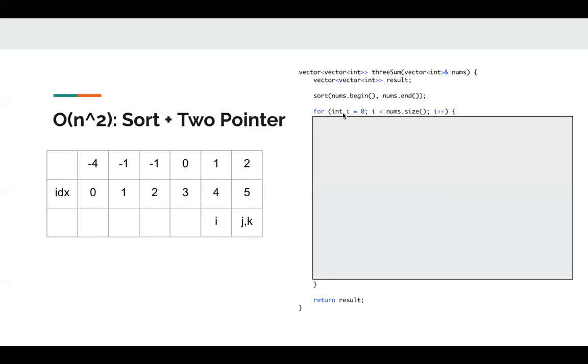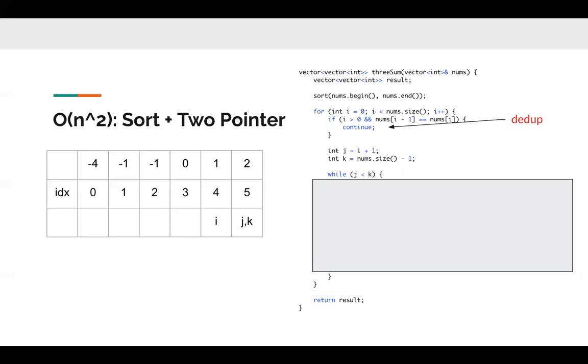As we mentioned, this is used for dedupe. As long as nums[i] is same as the previous element, we can skip this i. Next, we set j and k. As long as j is smaller than k, we can keep running.